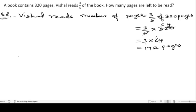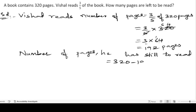So we will find out number of pages he still has to read. Number of pages he has still to read, that is total 320 minus 192. So we will get 10 minus 2 is 8, 11 minus 9 is 2, and 2 minus 1 is 1. So 128 pages he still has to read.